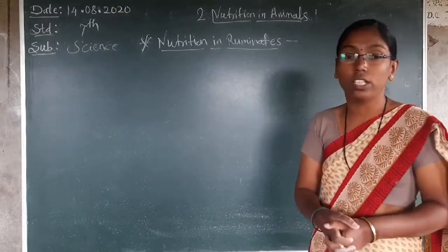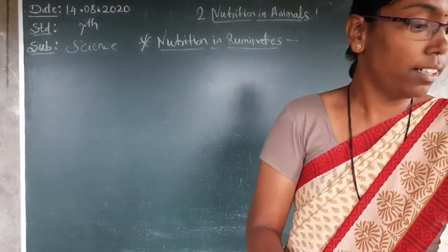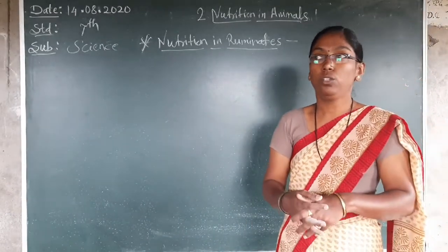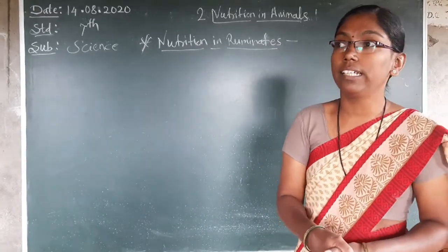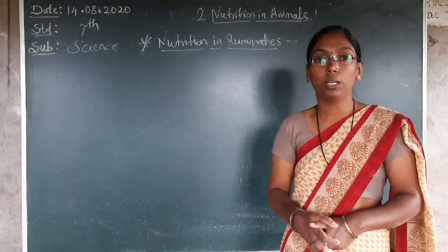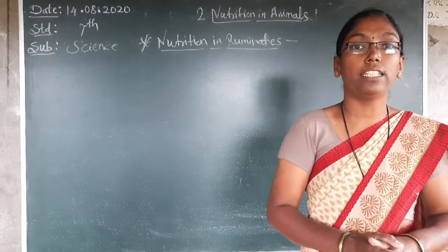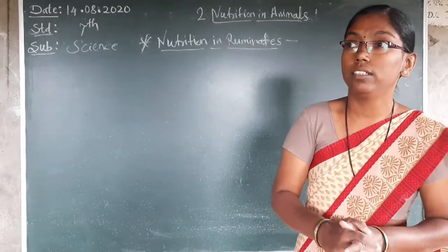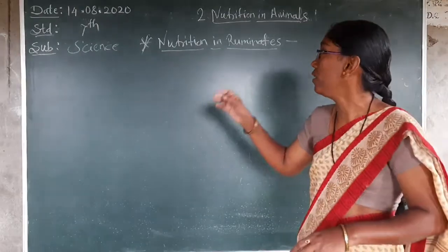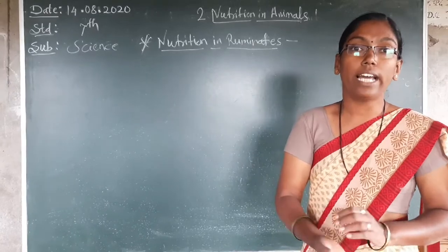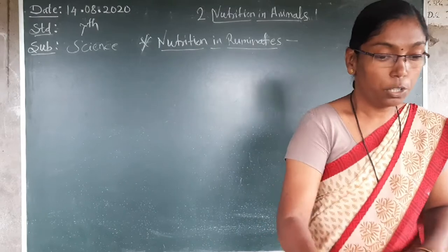The next concept is nutrition in ruminants. What do we mean by ruminants? This nutrition is related to certain animals — cows and buffaloes. In Marathi, you can say it: 'ramanta karnare prani.' Cows and buffaloes are the ruminants. They can ruminate their food, so they are called ruminants.